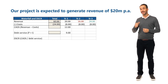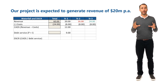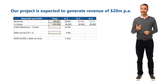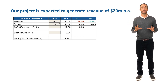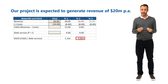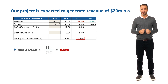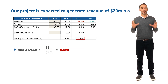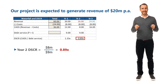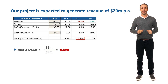So our DSCR in year one is 1.33x. However, in year two, our CADS is only $8 million — $1 million less than our debt service — and our DSCR is 0.89x. In year three, CADS is now $16 million, much higher, so our DSCR is $16 million divided by $9 million, which equals 1.77x.